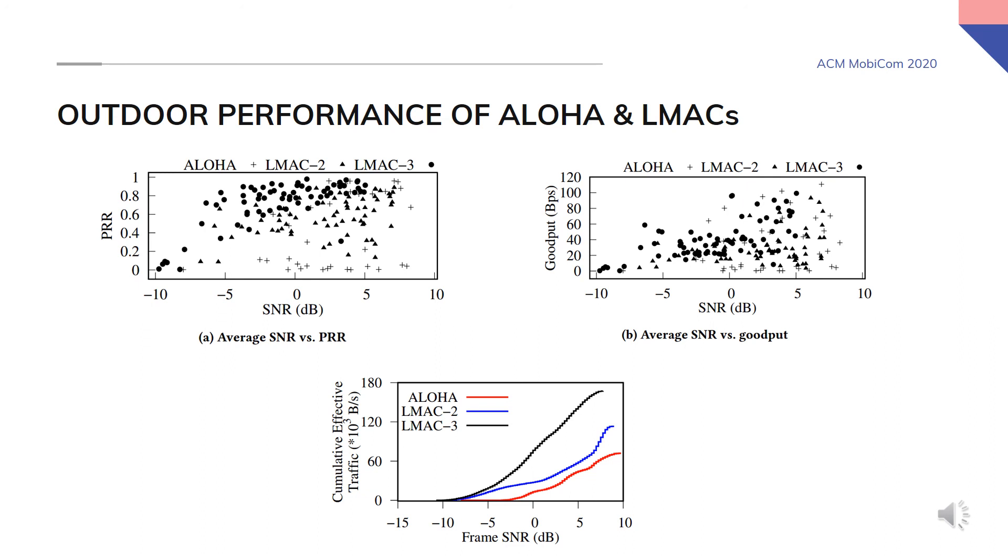We also present the cumulative traffic for all protocols under varying SNRs. As you can see, effective traffic of Aloha only starts to rise at an SNR of 4 dB while LMACs starts to increase at a much earlier time.